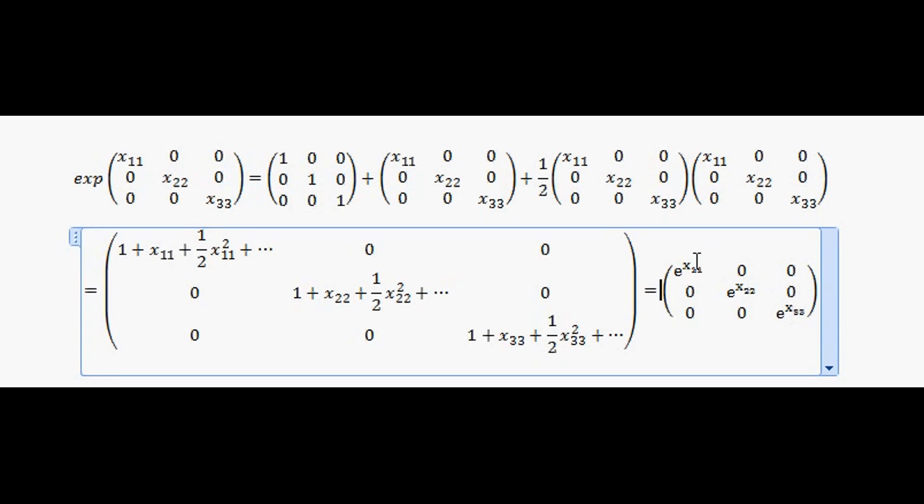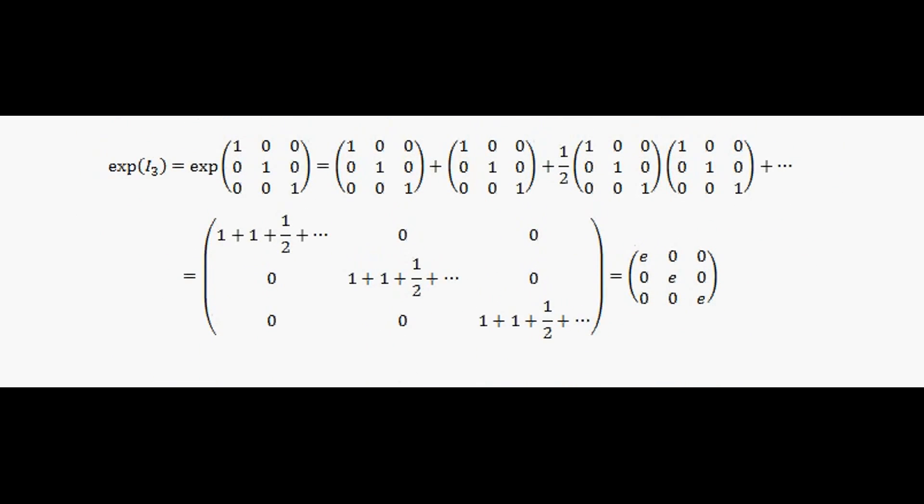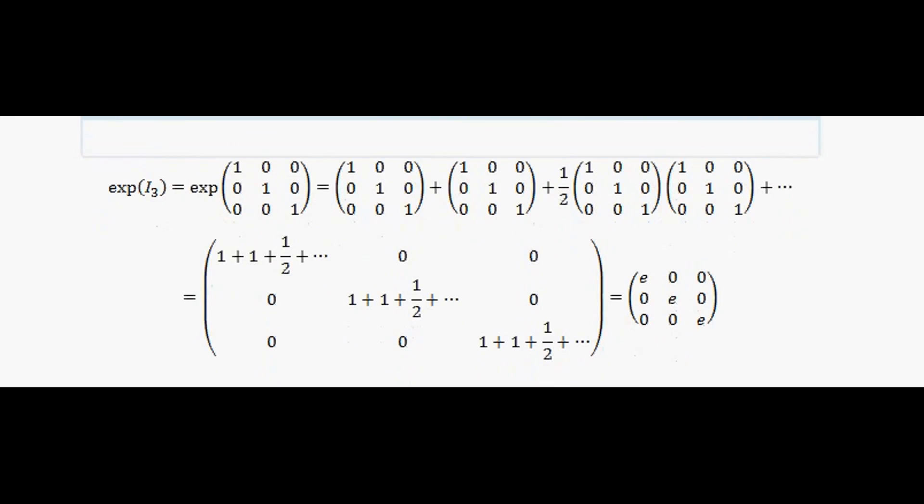And finally, you can sort of look through this example yourself if you want to. And this is just extending this and looking at the exponential of the identity matrix in numbered terms. That would be e to the power of 1. And, of course, all I'm doing is exactly the same procedure.